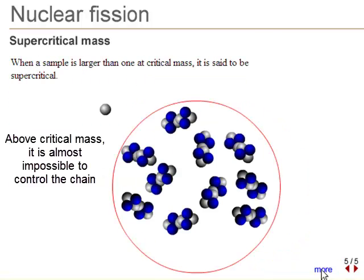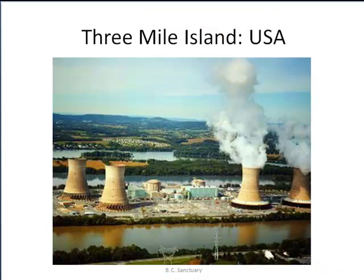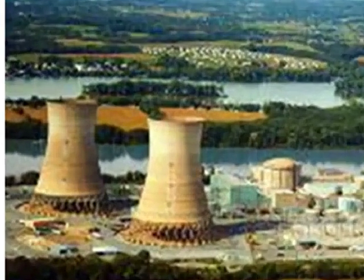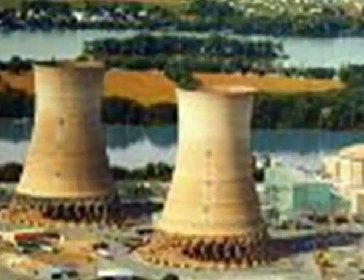At supercritical mass, a nuclear chain reaction goes out of control. If the chain reaction is out of control, then a nuclear meltdown can occur.